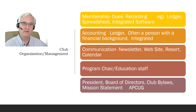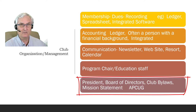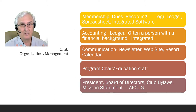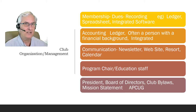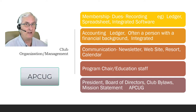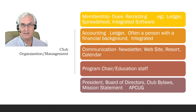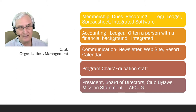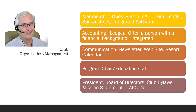Then there is, of course, the president — and you may be the president here today — the board of directors, club bylaws, and a mission statement. Those all sound like very complicated things and they're a lot of work. One of the key pieces of advice I can give: if you are considering starting a club or just getting going, please contact APCUG — the Association of Personal Computer User Groups. It's your national organization across Canada and the United States that will help you get your club going. The dues are $50 a year and they will provide all the bylaws and help you get everything set up.